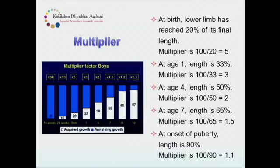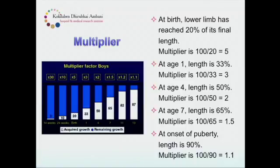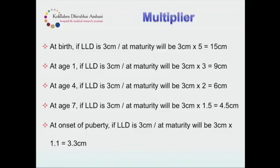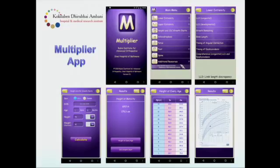The landmark ages to remember are one, four, seven, and pre-pubertal. In simple terms: a child with 3 cm discrepancy at birth multiplied by 5 gives 15 cm at maturity. The same child presenting at age seven with 3 cm, multiplied by 1.5, gives an anticipated discrepancy of 4.5 cm at skeletal maturity. This works extremely well as long as you understand Shapiro's work — these multipliers are for congenital problems following a steady upward slope. For conditions that don't follow this pattern, the simple multipliers won't work so easily.